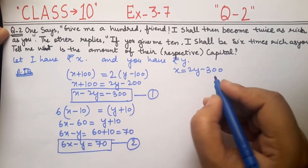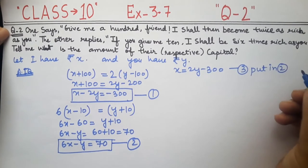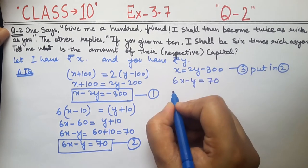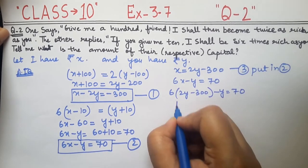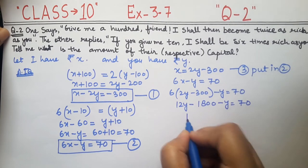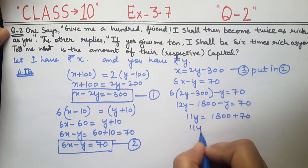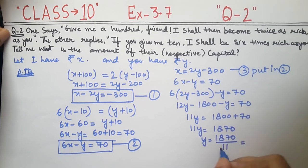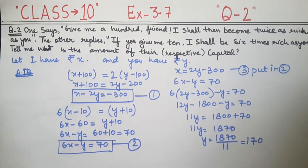We will put the value of x from equation 3 into equation 2, which is 6x minus y equals 70. Substituting: 6 times (2y minus 300) minus y equals 70, giving 12y minus 1800 minus y equals 70, so 11y equals 1800 plus 70, which is 1870. Therefore y equals 1870 divided by 11, which gives y equals 170. So you have 170 rupees.